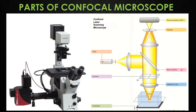The detectors are used to detect the fluorescence emitted by the samples at different depths. There are typically multiple detectors in a confocal microscope, including detectors for different wavelengths of fluorescence. The control and data acquisition system is responsible for controlling the various components of the confocal microscope and storing data from the detectors, typically including a computer and specialized software.